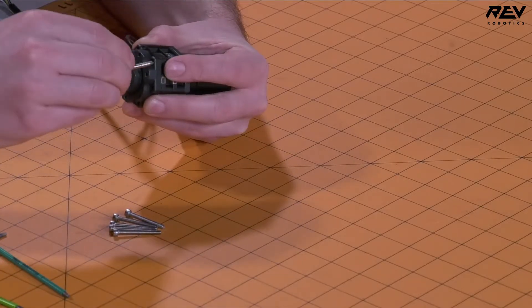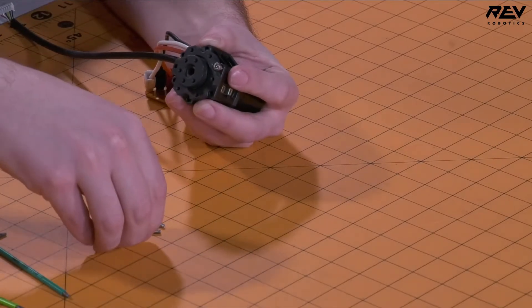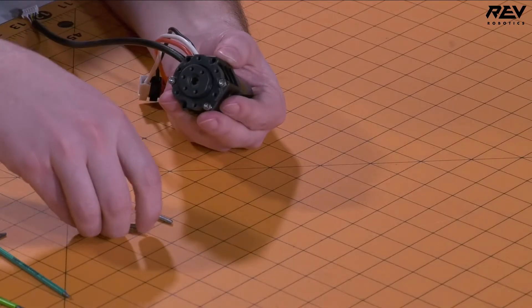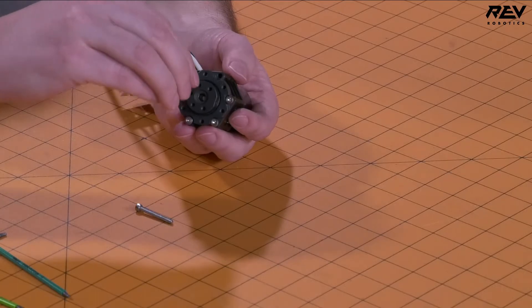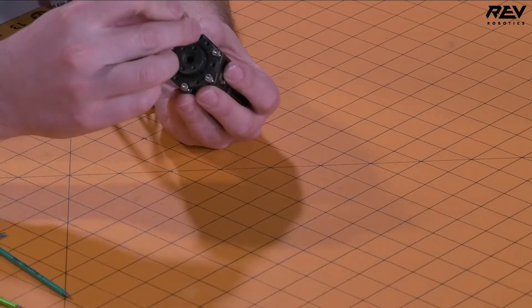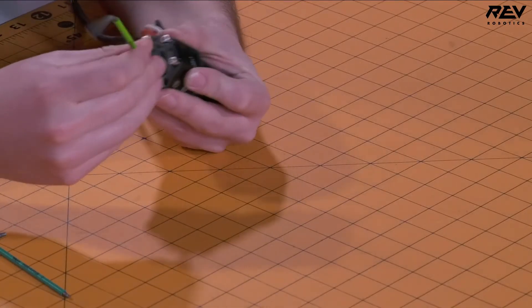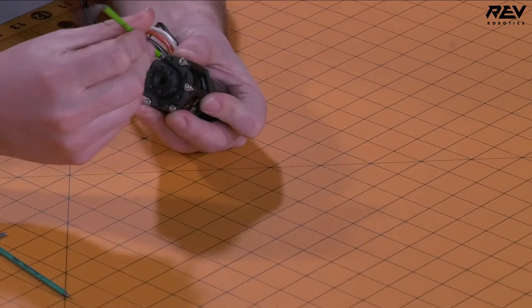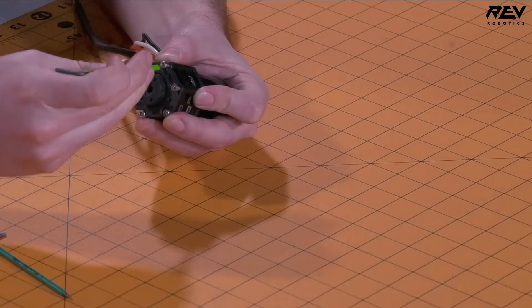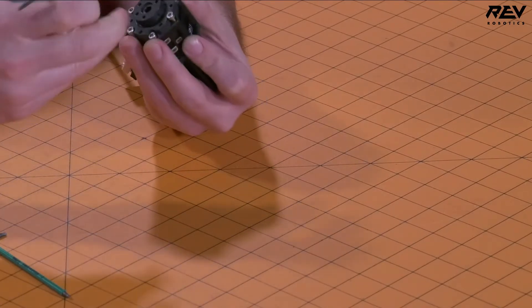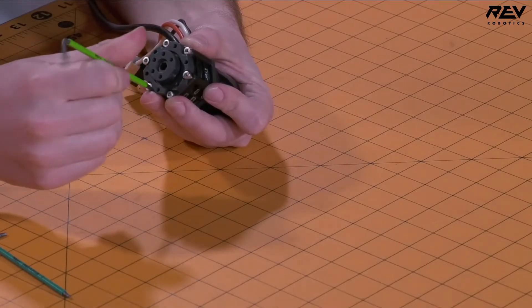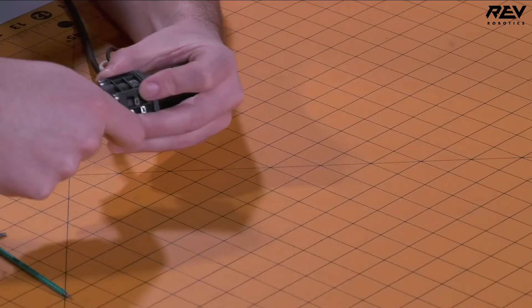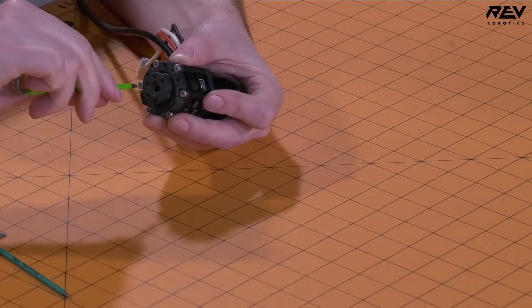Once those cartridges are on, take the remaining hardware and put these on here. These are also M3 screws, 30 millimeters in length. It's 10 millimeters for every stage, and also the output itself. So if you're ever needing to know how long of a screw you need to put the gearbox together, it's pretty easy to remember. Then we want to make these all nice and snug. You could take a little bit of Loctite if you're worried about it backing out. But for the most part, you just need to get these nice and snug, and you'll be good to go.